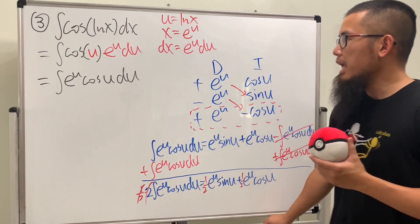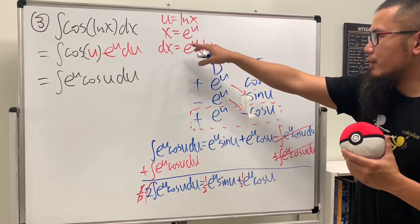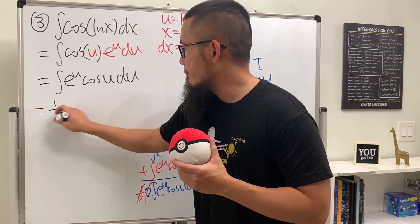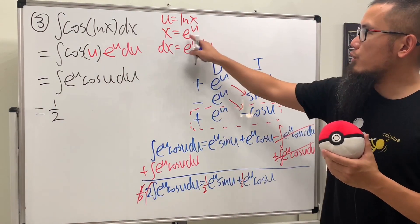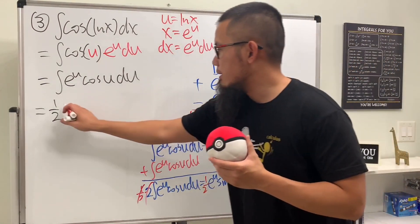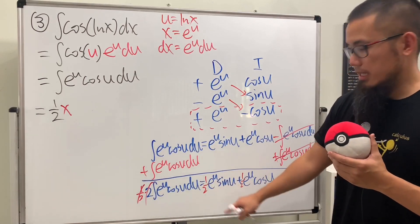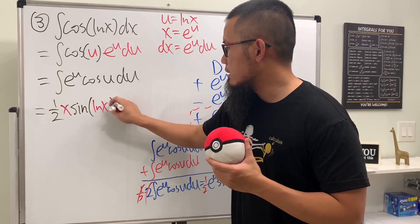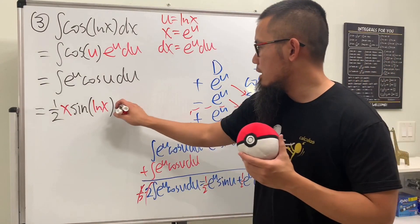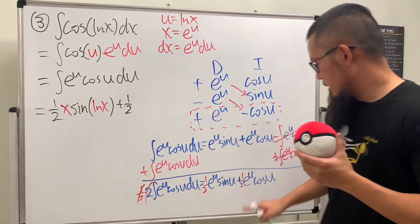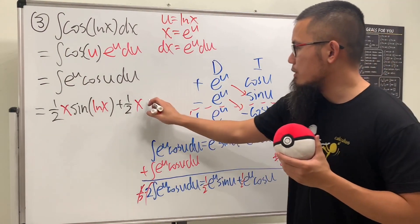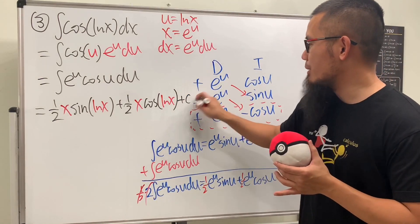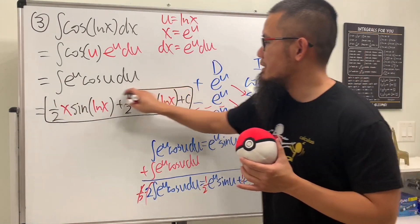Now let's put the u back in terms of x. We have one half, then e to the u which is just x, times sine u which is sine of ln x. Plus one half, then e to the u which is x, times cosine u which is cosine of ln x. Put on the plus c — that's it.